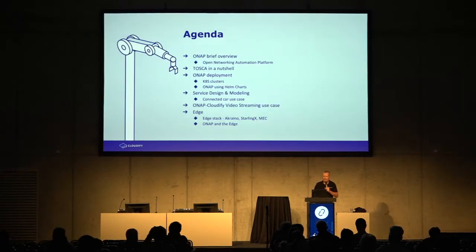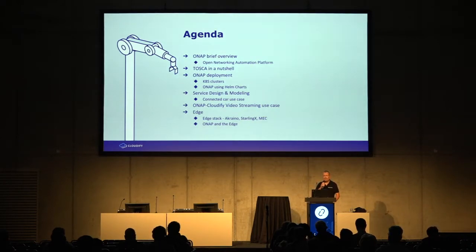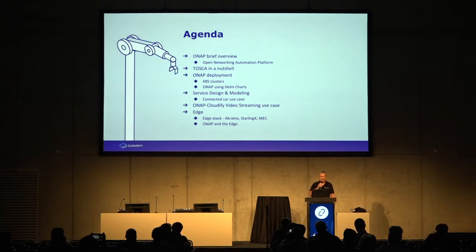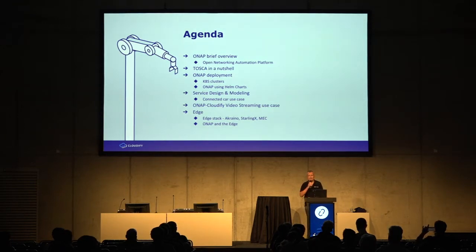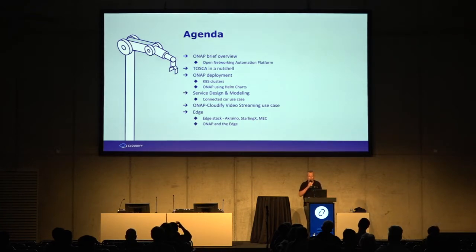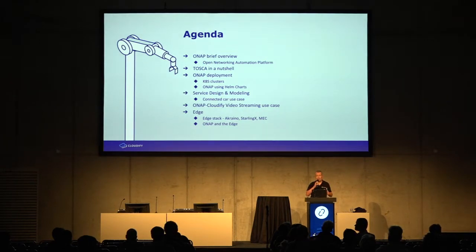Let's start with what is OnApp. I will briefly cover OnApp, then explain Tosca — we use Tosca as an intent-based model for orchestration. Then I'll explain how we can deploy OnApp in one or more clusters on top of Kubernetes, and show some nice use cases using the OnApp SDC, the service design and modeling, the SO — the service orchestrator — and Cloudify. I also have a use case for video streaming, and then I'll move to the edge to show how we can orchestrate an edge and master deployment.